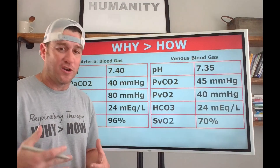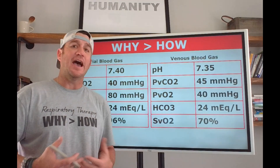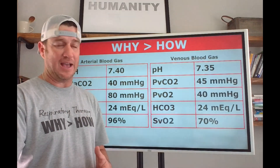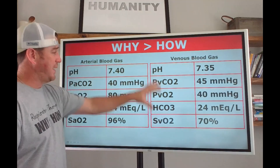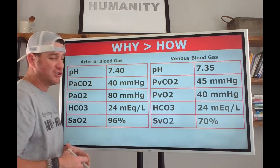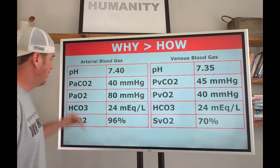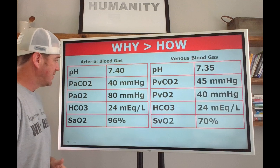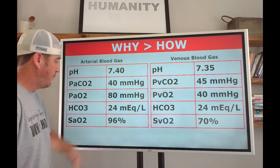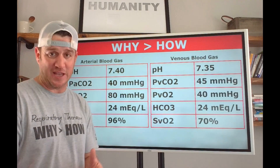This video is all about differentiating, with the values that you have in your hand, how you can tell the difference between an arterial blood gas versus a venous blood gas. On the left side of your screen are all arterial values and they're all normal: a normal pH at 7.40, a normal CO2 at 40 mmHg, a normal PaO2 at 80 mmHg, a normal bicarb at 24 mEq/L, and a normal SaO2 at 96%.